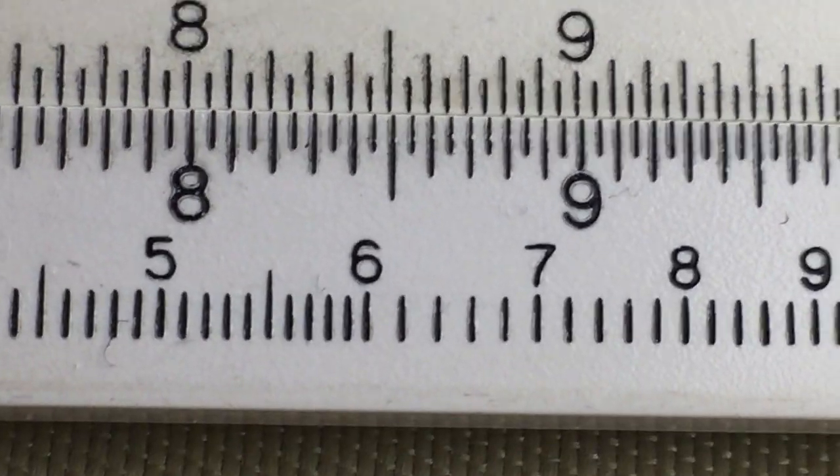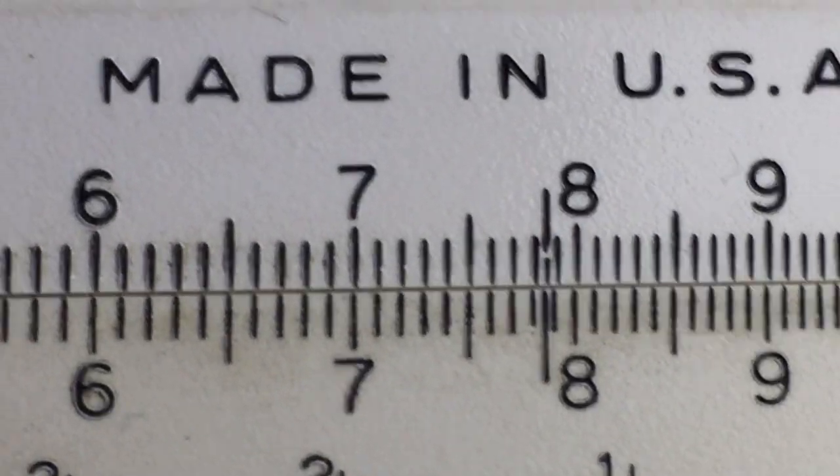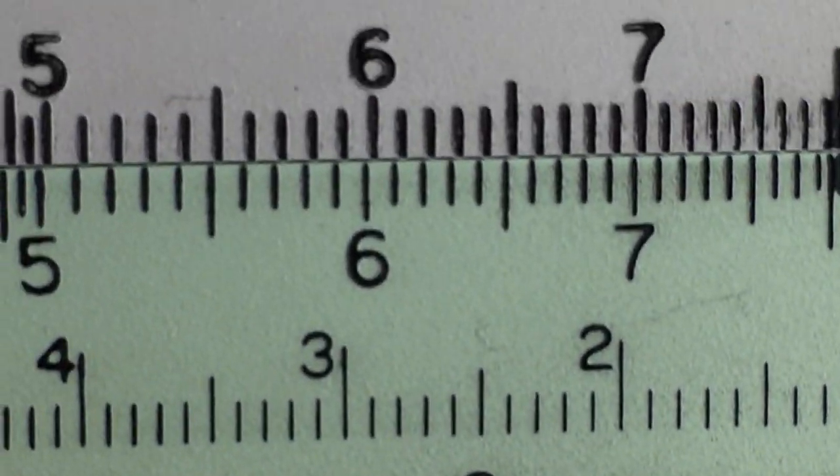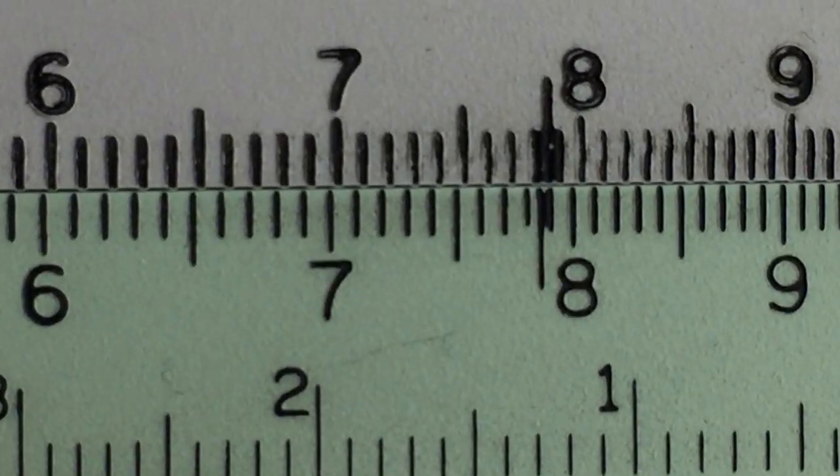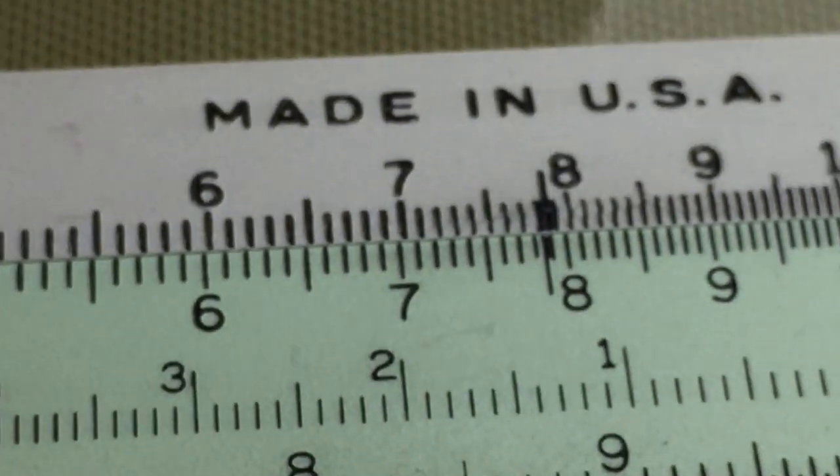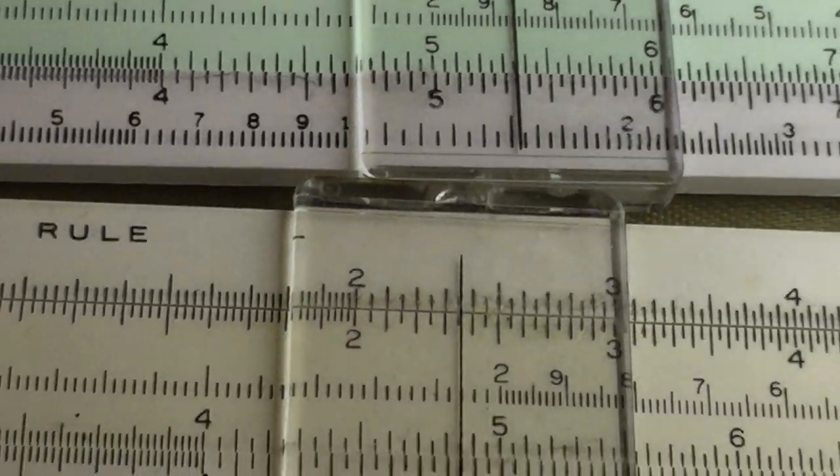So if you get a slide rule and you notice some funniness going on around here around the 8, especially on the A and the B scale, that's what it is. Don't try to erase it, it's not gonna get you anywhere. Thanks for watching.